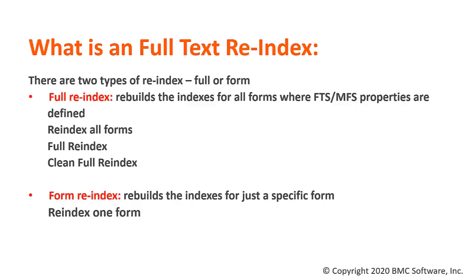So what is a full FTS re-index? There are two types of re-index: a full re-index and a form re-index. A full re-index would be used to resolve errors related to corruption within the collection directory, and when executed, rebuilds all indexes for all forms where FTS and MFS properties are defined. A clean, full re-index is where you delete the contents of the collection directory as well as the FT pending table. A full re-index rebuilds the indexes without clearing the collection directory. Finally, a form re-index would rebuild the indexes for just a specific form.